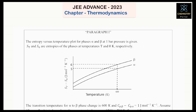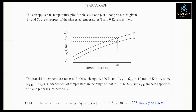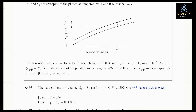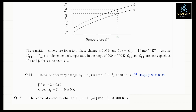In this question, an entropy versus temperature plot for phases alpha and beta at one bar pressure is given. This represents a phase transformation reaction: alpha changing to beta. The transition temperature for alpha to beta phase change is 600 K.